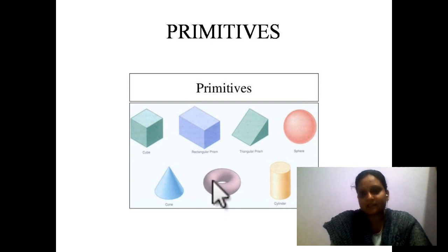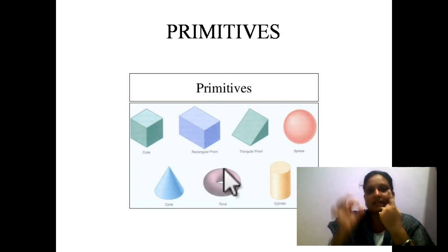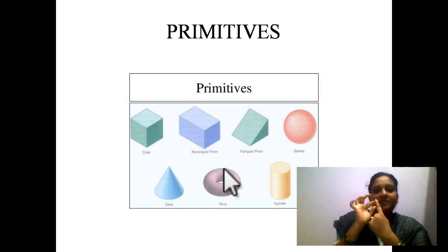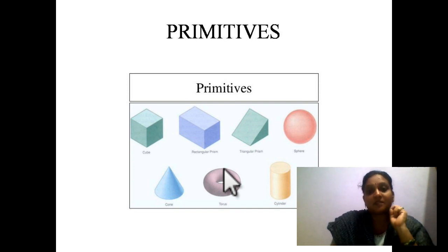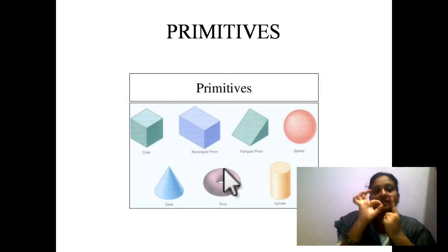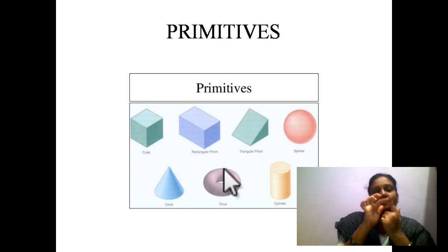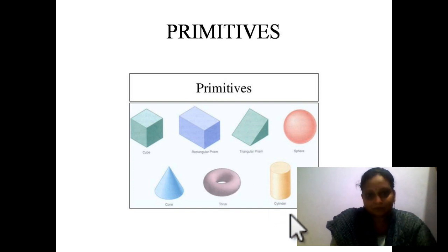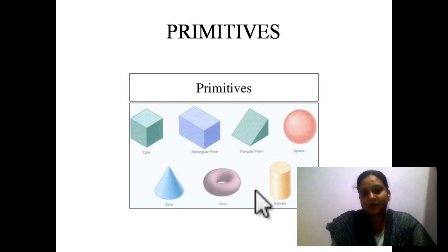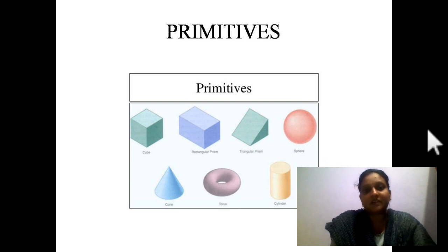A torus is formed by rotating a circle around an axis. If you have an axis and a circle at some distance and rotate the circle around the axis, you get a torus. To represent the torus geometry, we define two things: the distance of the circle from the origin or axis, and the distance between the two centers — that is, the radius of the torus and the radius of the circle. A cylinder is represented by its radius and height. These standard primitive shapes are already available in the software; you just input the required dimensions.